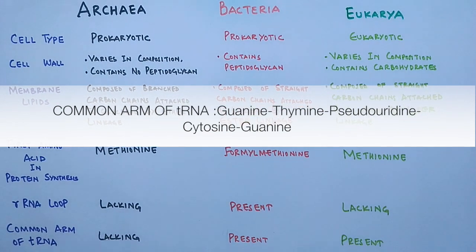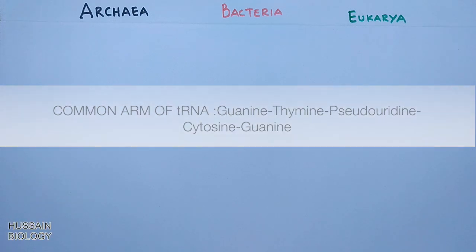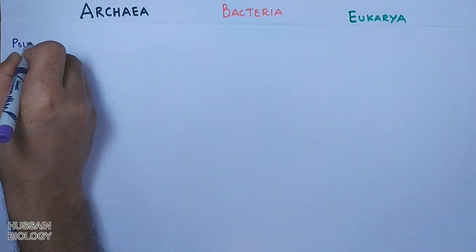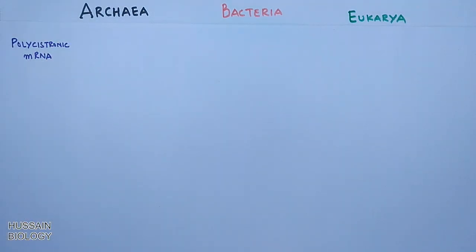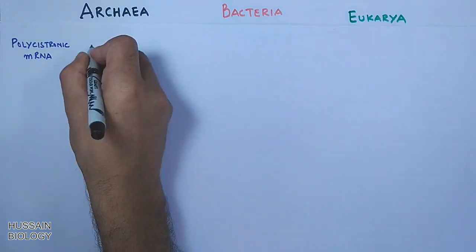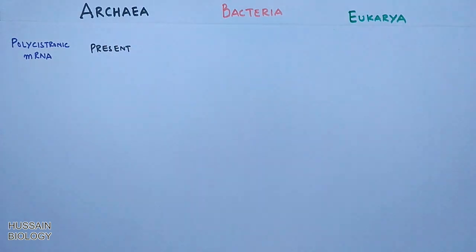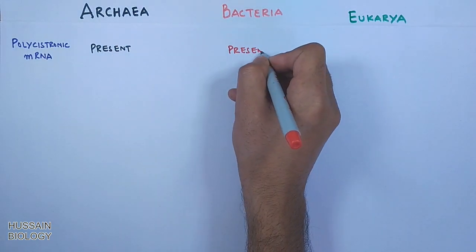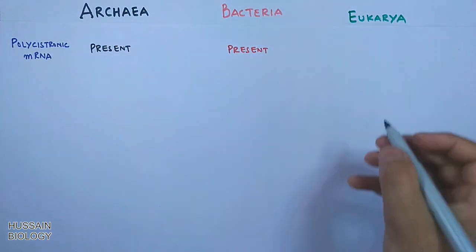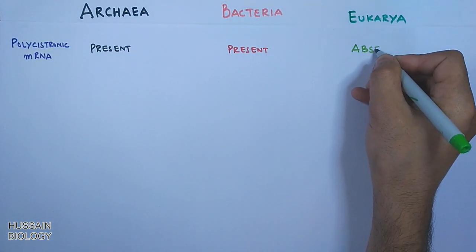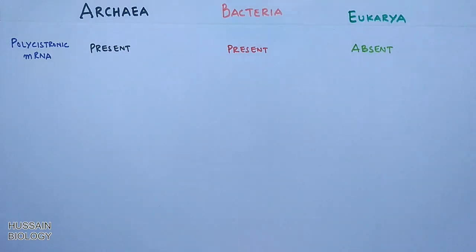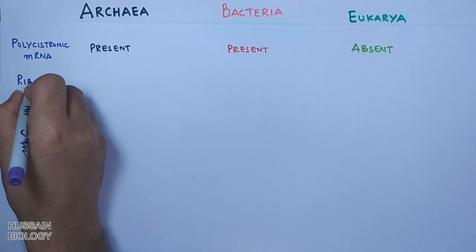Then we see the presence and absence of polycistronic mRNA. Polycistronic mRNA is present in both Archaea and Bacteria, while it is absent in Eukarya.